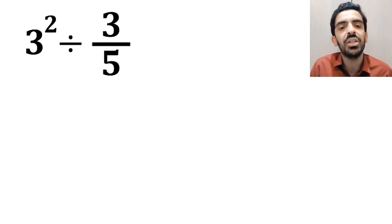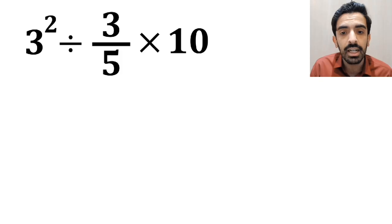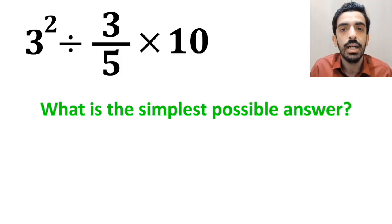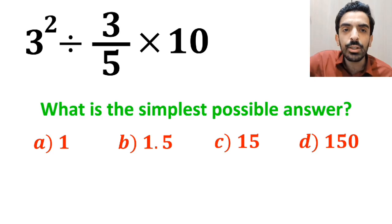If we have the expression 3 to the power of 2 divided by 3 over 5 multiplied by 10, then what is the simplest possible answer to this question? Which option do you think is the correct answer to this question?